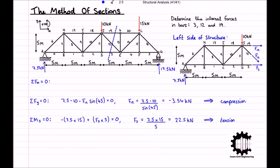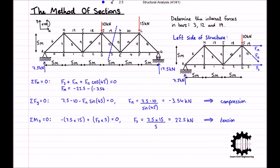Taking the x-coordinate direction as positive, the sum of all horizontal forces equals F3 plus F19 plus F12 times cosine 45, which equals zero. Substituting the known values of F3 and F12 and rearranging for F19: F19 equals negative 22.5 minus negative 3.54 times cosine 45, which equals negative 20 kilonewtons. So bar 19 is also under compression.